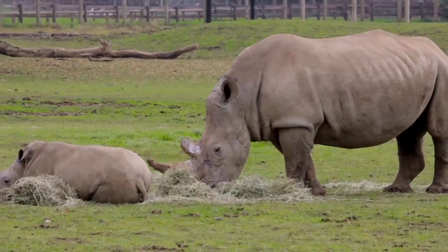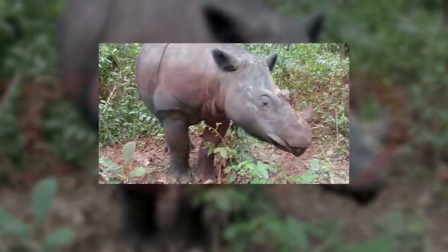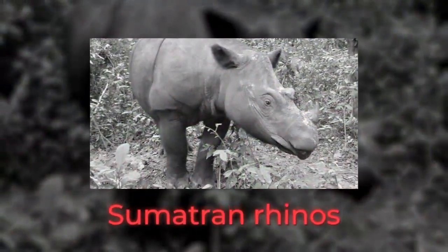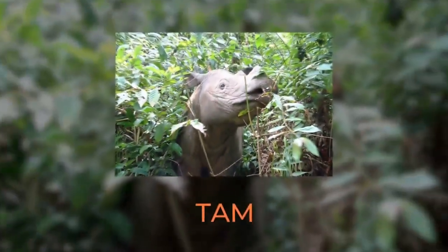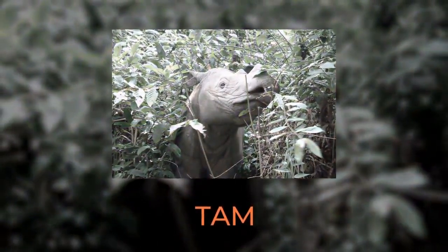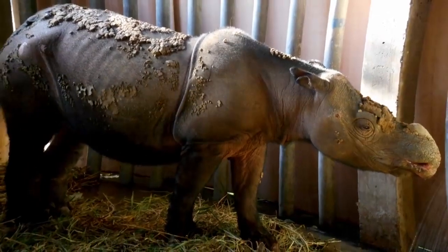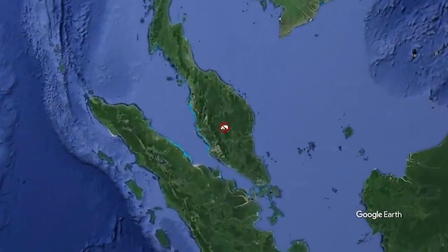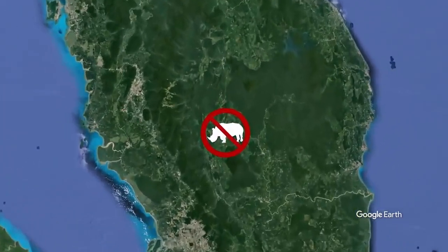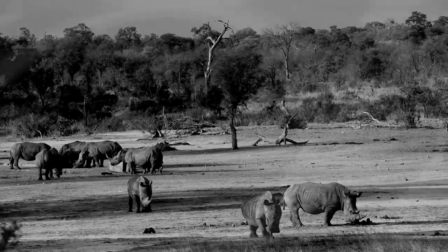The saddest scientific event of 2019 was the death of the last Sumatran rhinos in Malaysia. On May 27th, a 30-year-old male named Tam passed away due to kidney and liver failure. And six months later, the last 25-year-old female Sumatran rhino, Iman, was taken by cancer. Now, this species is officially extinct in Malaysia. In other countries, their total number is no more than 100.